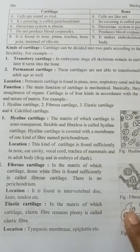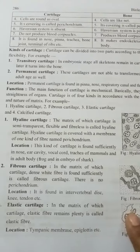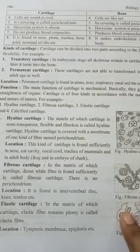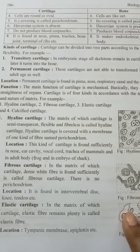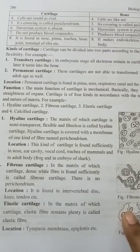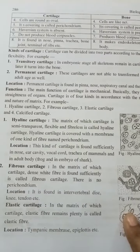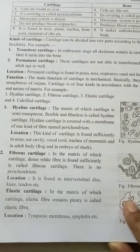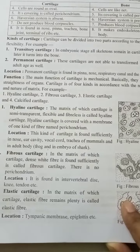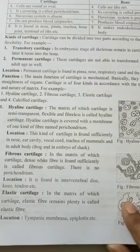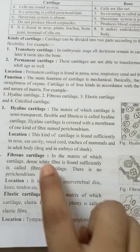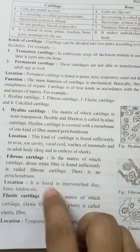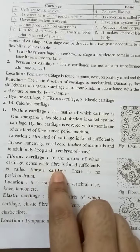So this is about the types of cartilage — very important to learn and remember. There are four types: hyaline, fibrous, elastic, and calcified cartilage. Among the four, fibrous cartilage — or fibrocartilage — is as strong as bone because it has dense white fiber.